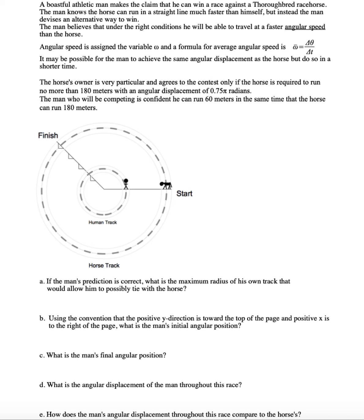This example is supposed to illustrate the difference between linear speed and angular speed. A boastful athletic man makes the claim that he could win a race against a thoroughbred racehorse. The man knows that the horse can probably run in a straight line much faster than he himself can, so instead the man devises an alternate way to win. The man believes under the right conditions he'll be able to travel at a faster angular speed than the horse.